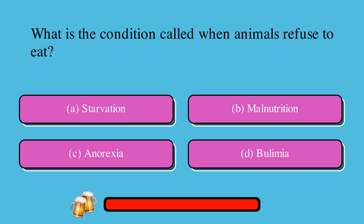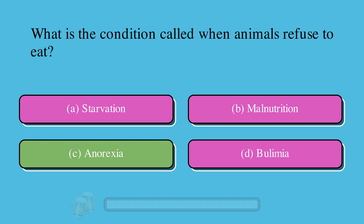What is the condition called when animals refuse to eat? A. Starvation, B. Malnutrition, C. Anorexia, or D. Bulimia. The correct answer is C. Anorexia.